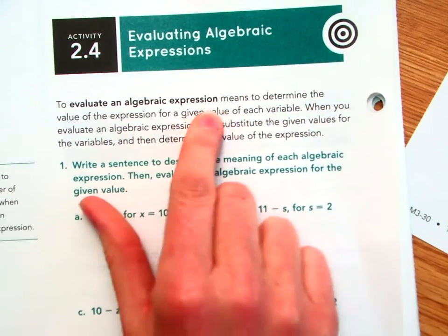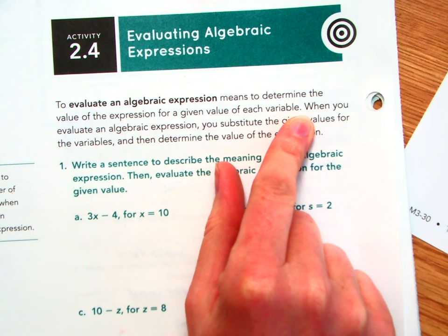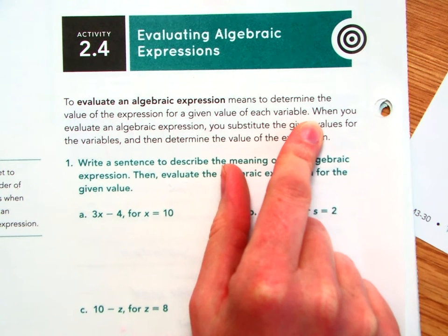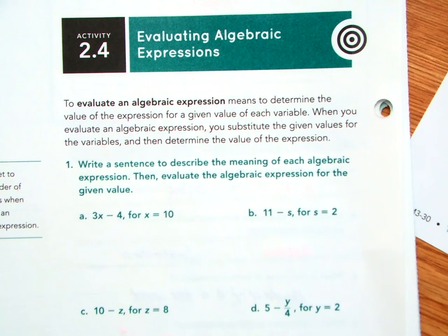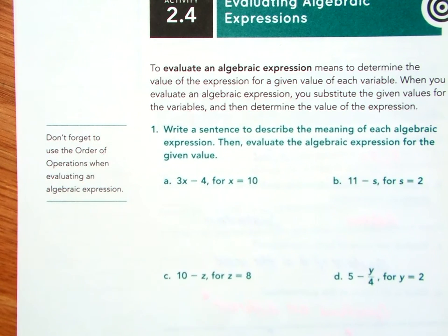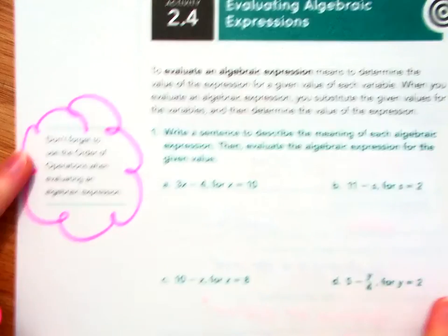So that is the procedure that I'm going to continue on with for activity 2.4. So let's get started. To evaluate an algebraic expression means to determine the value of the expression for a given value of each variable. That just means, basically, solve it when we tell you what the variable is worth. When you evaluate an algebraic expression, you substitute the given values for the variables, and then they determine the value of the expression. One little note over here. Don't forget to use the order of operations when evaluating an algebraic expression. And I agree with that note. It'd be really easy to get mixed up. But it's still relevant. So, let's highlight that.